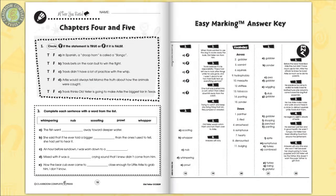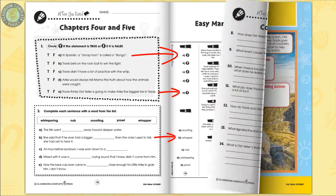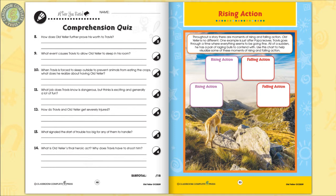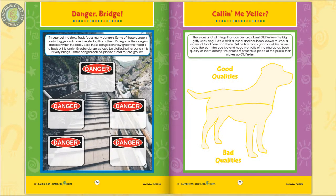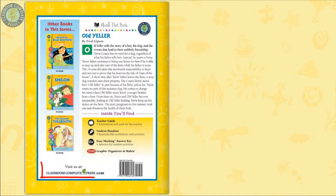The easy-marking answer key works by lining up perfectly with the matching question pages. Three color posters, which are graphic organizers, complete the resource. Categorize the different dangers Travis faces throughout the novel on a graphic organizer. Visit our website to see more novel study guides just like it.